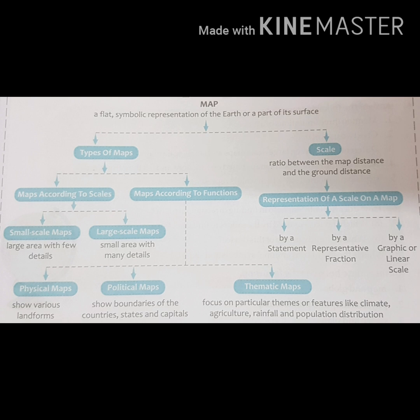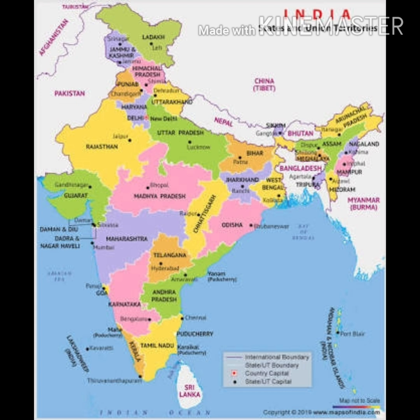First we should know about the political map. What are political maps? Political maps show the countries of the world. They also show international borders, state capitals, cities, and towns. They are drawn on a small scale and give very little information — they just show the boundaries and areas of states.